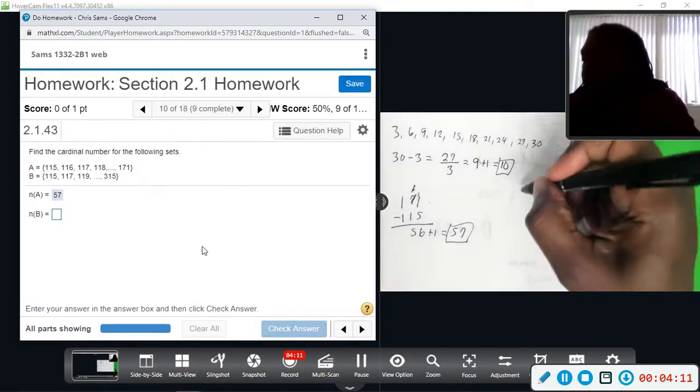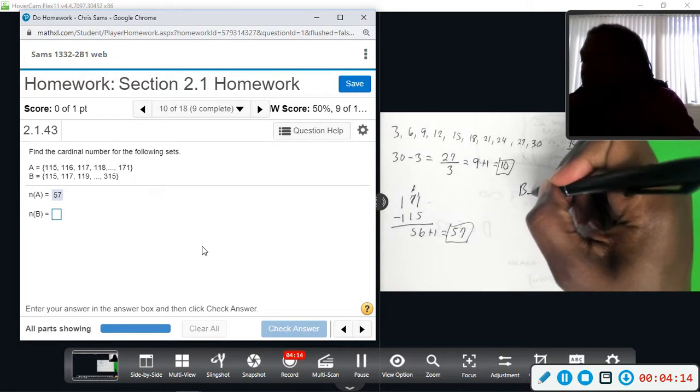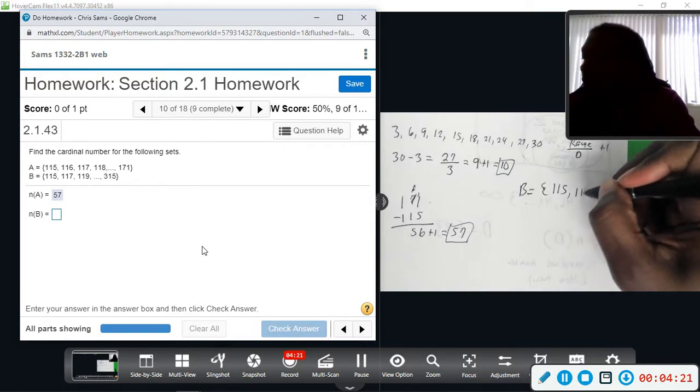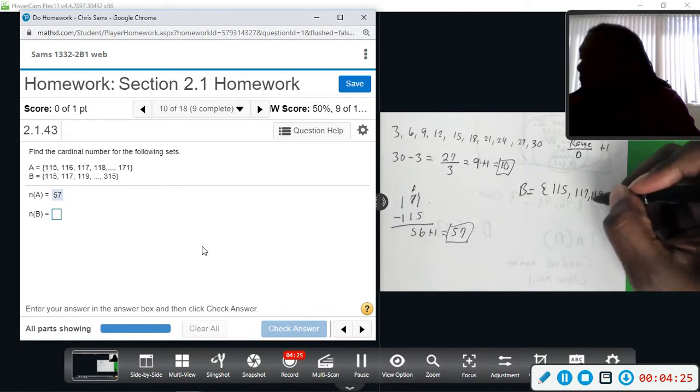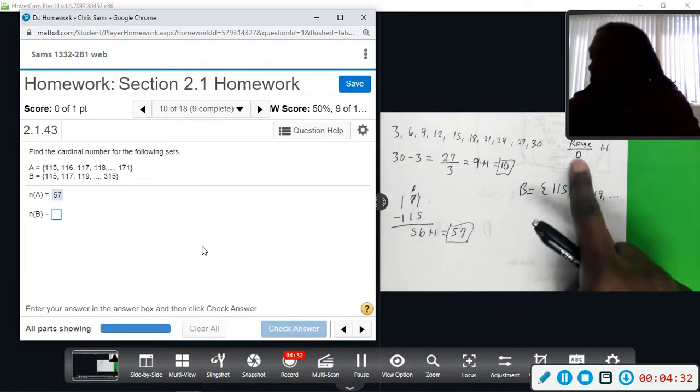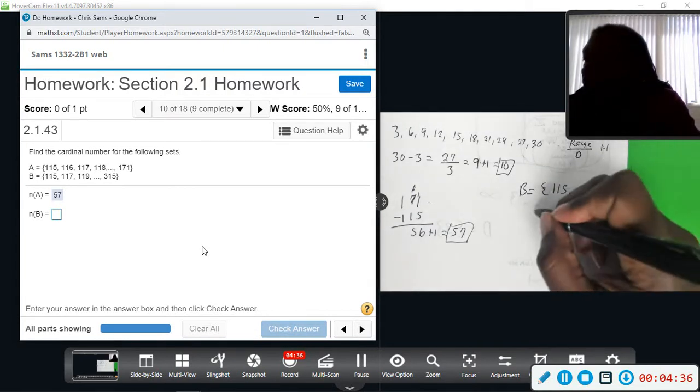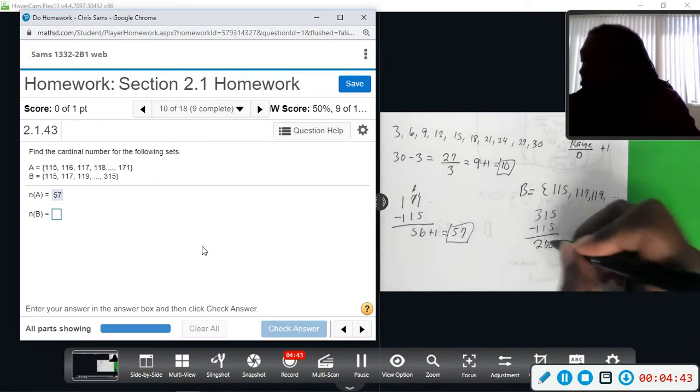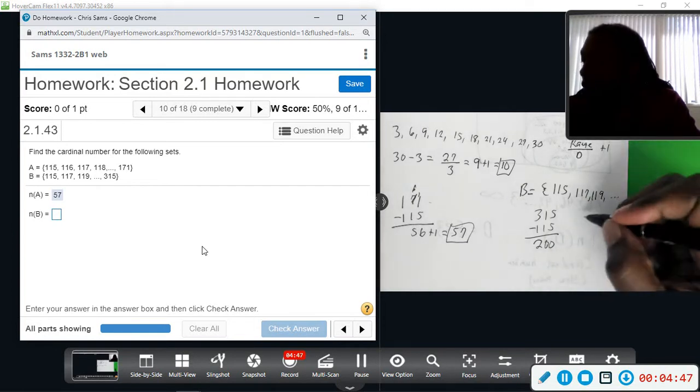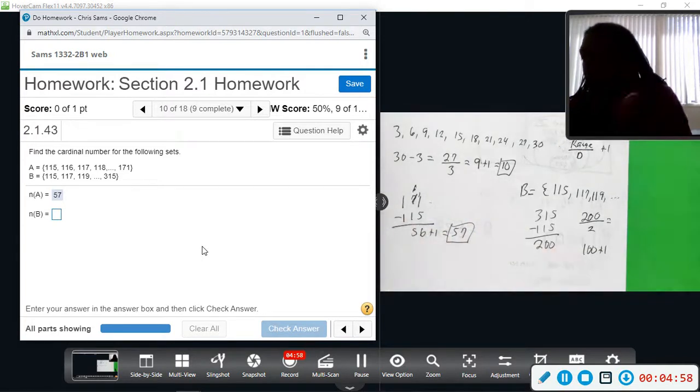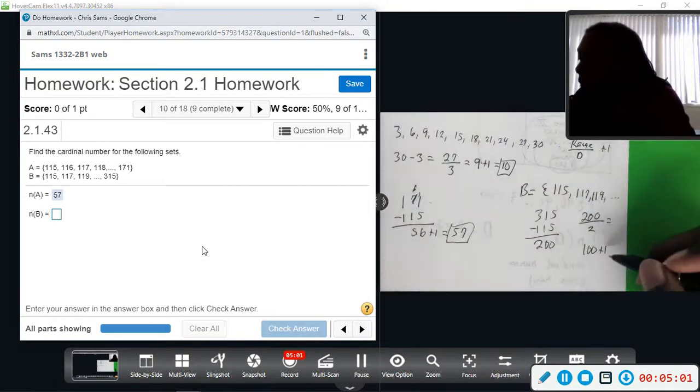All right, and then set B, we can see that it starts with 115, and then 117, 119, so on, all the way up to 315. So these numbers are counting by 2s. So that's what my difference will be. It's counting by 2s. So using my range first, 315 minus 115, we get a difference of 200. So that's my range. These numbers are counting by 2. So I'm going to take this number, divide by 2, and that gives me 100. And then don't forget to add your 1, because it's just telling you how many numbers are between those, not counting that first one. So we get 101.